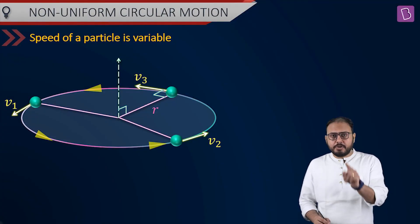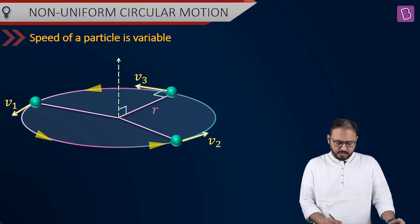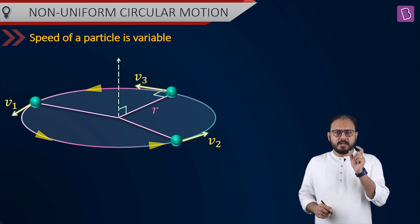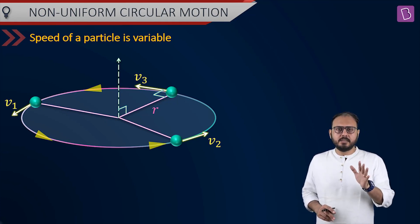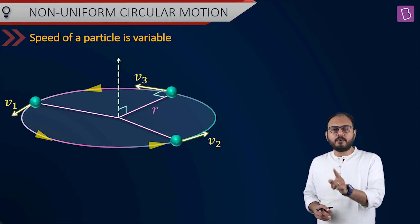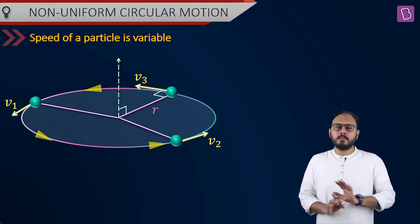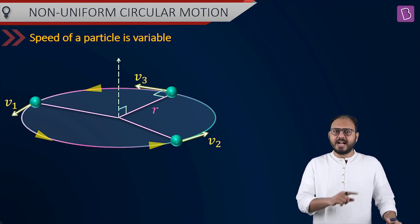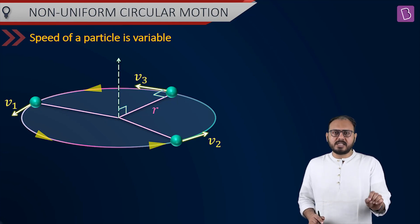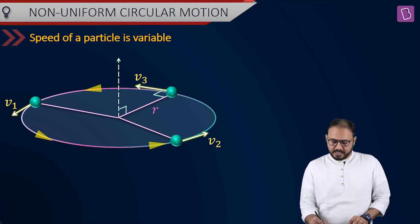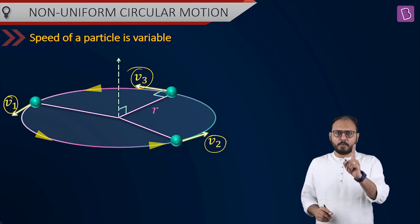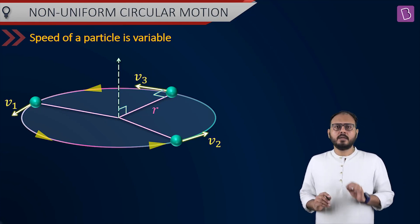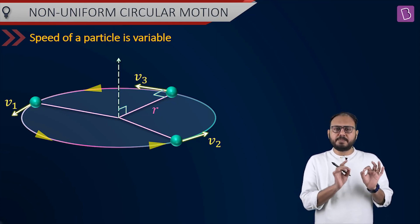Non-uniform circular motion. Let me recall uniform circular motion first. What is the one-line necessary and sufficient definition of uniform circular motion? Speed remains constant. What is the spot-on thing for non-uniform circular motion? Speed is variable. The basic DNA difference between UCM and NUCM is: speed is constant in UCM and speed is variable in NUCM. In UCM it was v, v, v — speed is constant. In NUCM, you can see v1, v2, v3 — speed is variable.